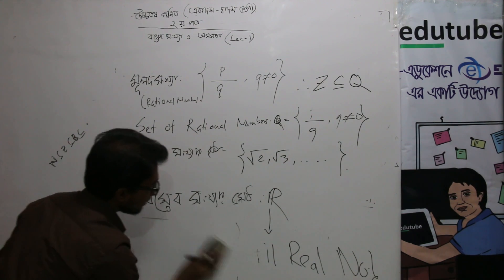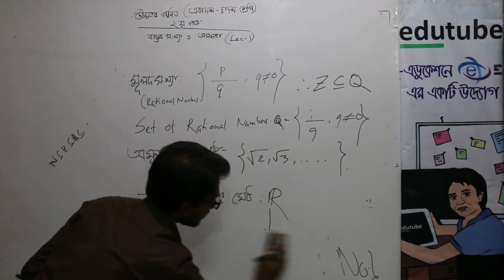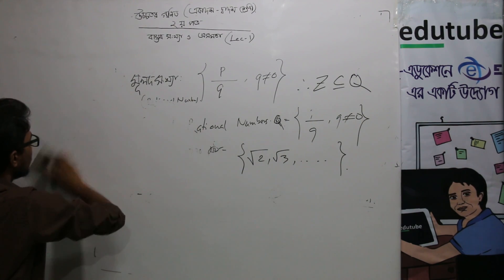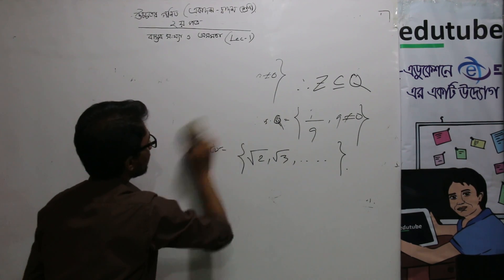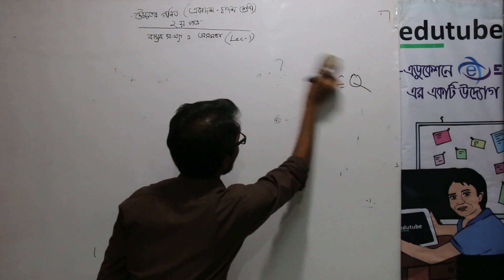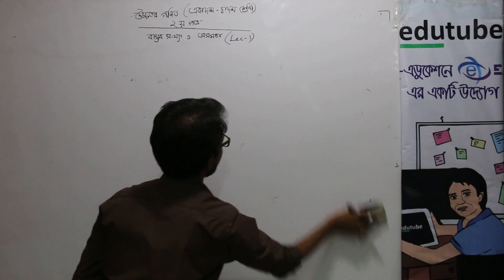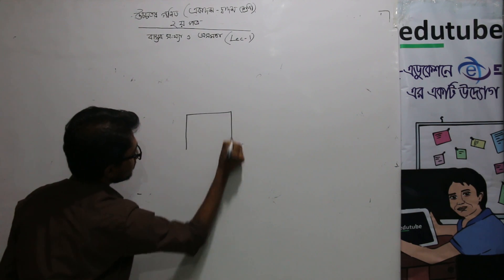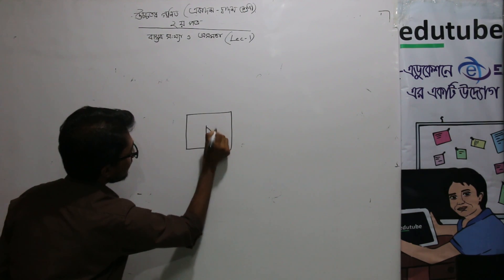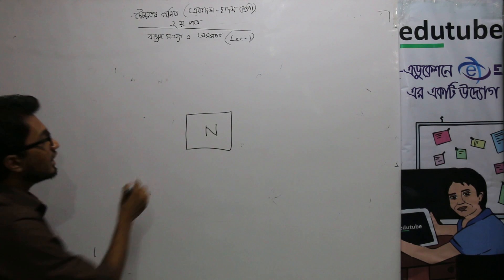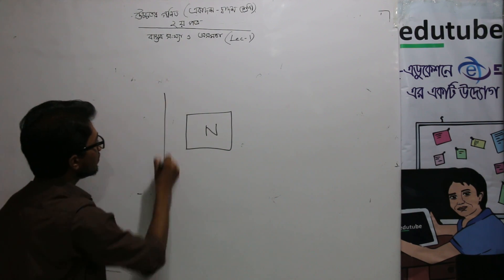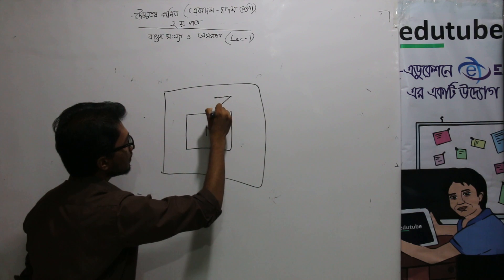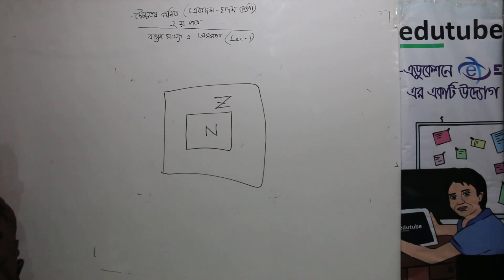Now for the real number set, let's draw an Euler diagram. I am drawing the diagram now. Z is placed inside here, and Q is placed outside of Z, larger.